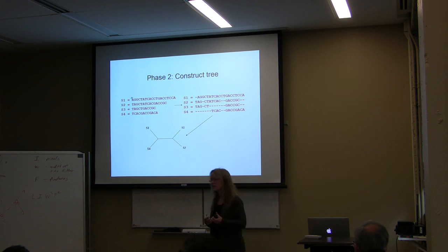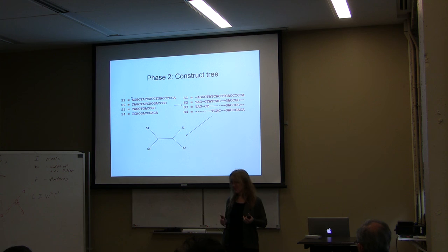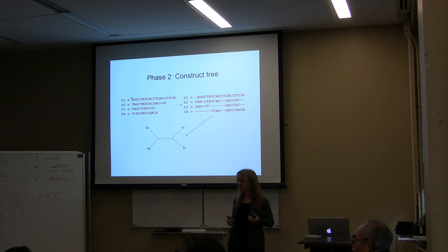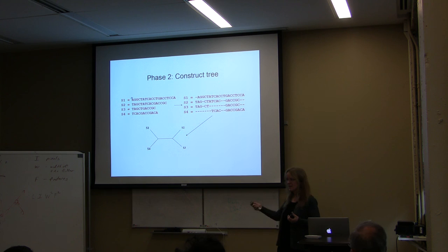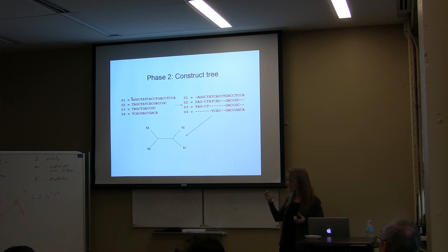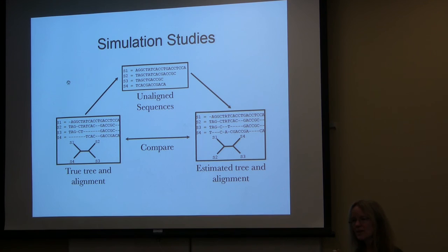The unlabeled vertices in the tree represent ancestral species that you don't know. Think of these as two black boxes: one taking you from unaligned sequences to sequence alignments, and another from a sequence alignment to a tree. There are many ways to fill those black boxes, which we'll get to.